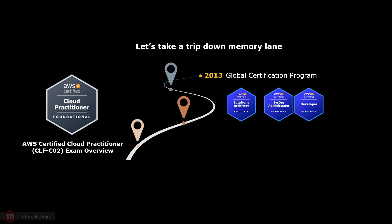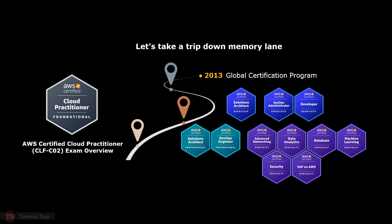Amazon has consistently grown and refreshed its certification program annually. They introduced a range of professional and specialty level certifications that cover various topics like advanced networking, data analytics, database, DevOps, machine learning, security, and more. With the ever-expanding array of AWS services, Amazon regularly unveils new and updated versions of the AWS certification exam. This update aims to stay current with recent service changes and incorporate emerging knowledge areas.